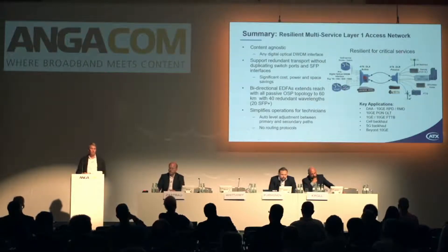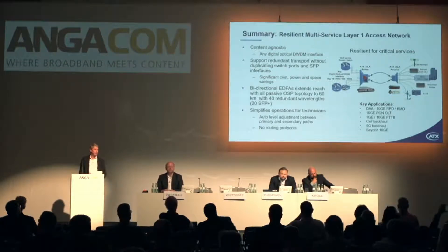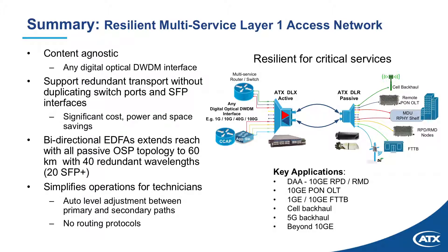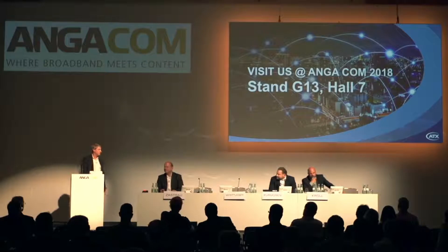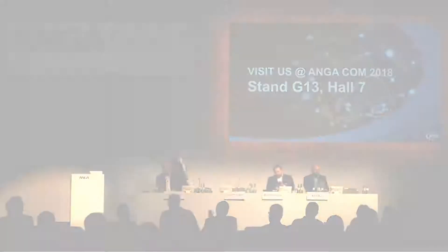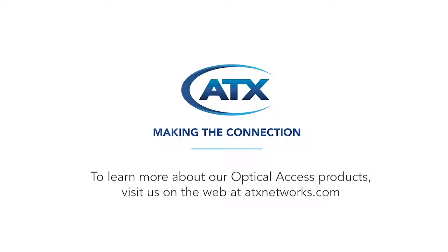In summary, the differences, pros, and cons of the layer one solution: it's content agnostic, taking DWDM wavelengths in any format and transporting them resiliently across the network, saving significant cost, power, and space by working at layer one and addressing the worst-case failure mechanism — the fiber cut — which takes the longest time to recover from. It also simplifies operations for technicians through auto-level adjustments and simplicity in setting up the network. Thank you very much.